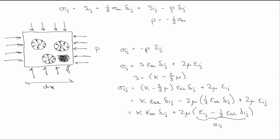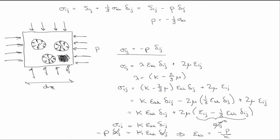If there's no deviatoric stress, there's no deviatoric strain — that term is zero — and our constitutive model reduces to σij = K εkk δij. We also know that σij = −p δij for the hydrostatic case, so plugging that in and canceling δij on both sides, this implies that εkk = −p/K. I'll now label that K as Ks, since this is the bulk modulus of the solid material.